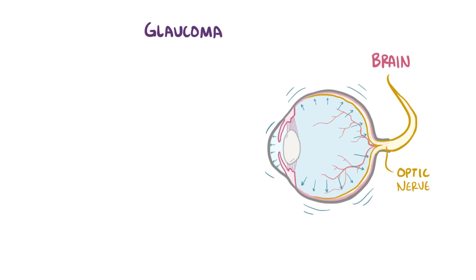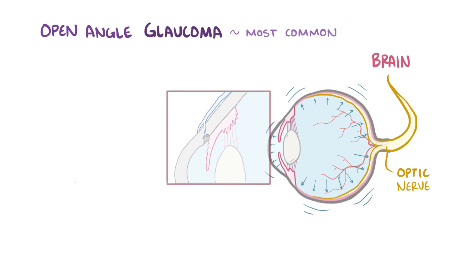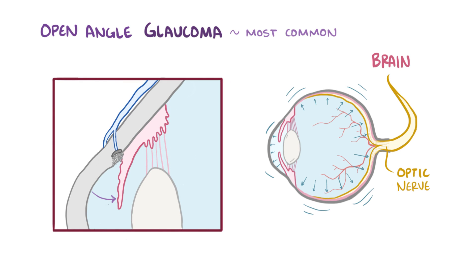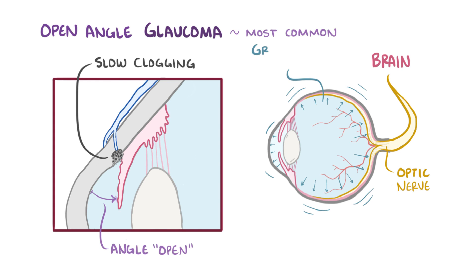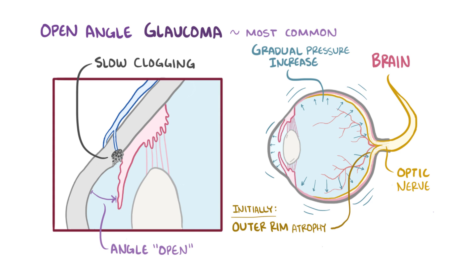There are a couple types of glaucoma. First, there's open-angle glaucoma, which is actually the most common, and it has this name because the angle between the cornea and the iris is open. In this type, the drainage system slowly gets clogged over time, and so there's this gradual increase in pressure on the optic nerve. This increase in pressure initially results in atrophy of the outer rim of the nerve, resulting in a decrease in peripheral vision. As that pressure increases even more, there's continued damage to the optic nerve, which eventually leads to a loss in central vision as well.